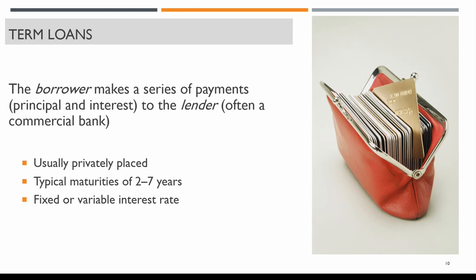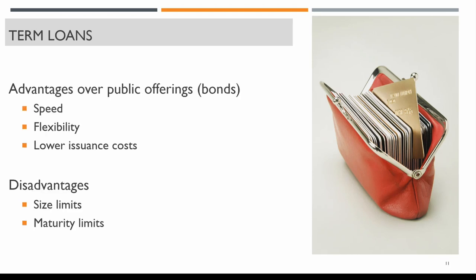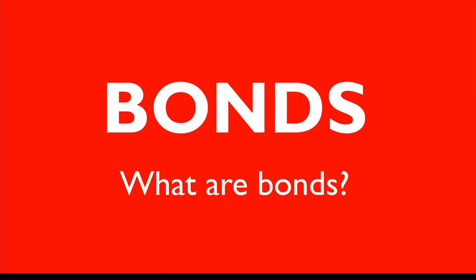Term loans typically have maturities spanning from two to seven years and carry either a fixed or variable interest rate. The advantages of term loans over public offerings or bonds are: first, speed — they are faster to acquire; second, flexibility; and finally, lower issuance costs. The main disadvantages are maturity limits and size limits.